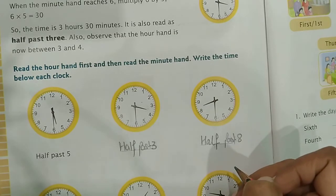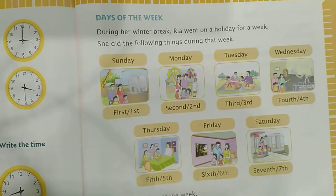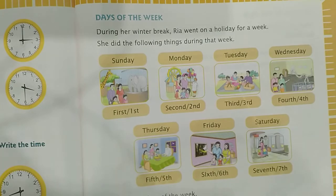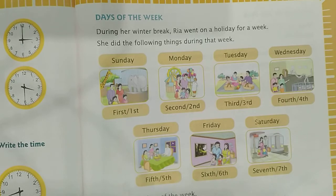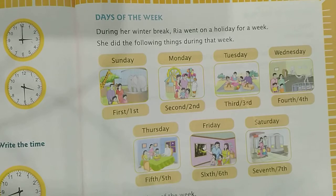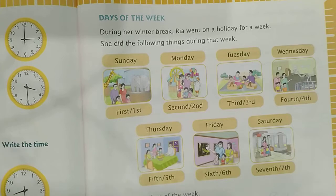Now the next topic is days of the week. You know very well that there are 7 days in a week. During her winter break, Rhea went on a holiday for a week: Sunday, Monday, Tuesday, Wednesday, Thursday, Friday, Saturday. The 1st day is Sunday, 2nd is Monday, 3rd is Tuesday, 4th is Wednesday, 5th is Thursday, 6th is Friday, and 7th is Saturday.